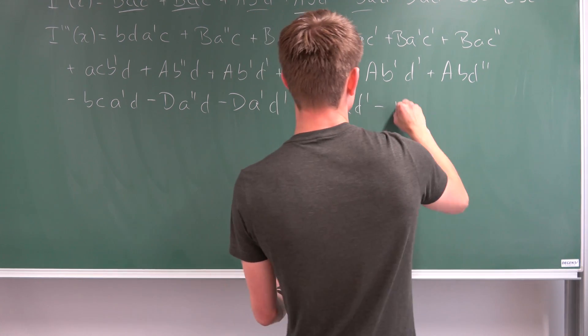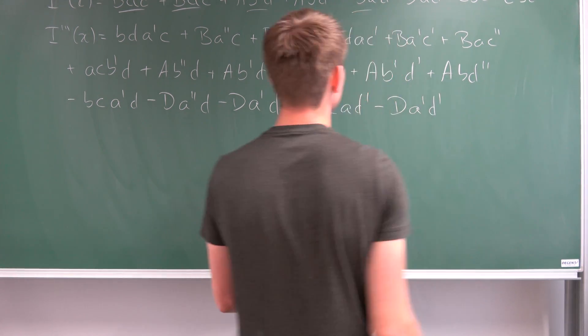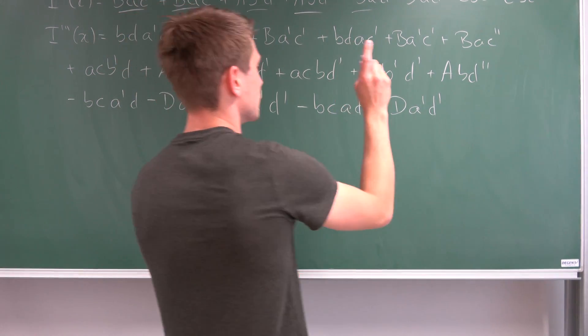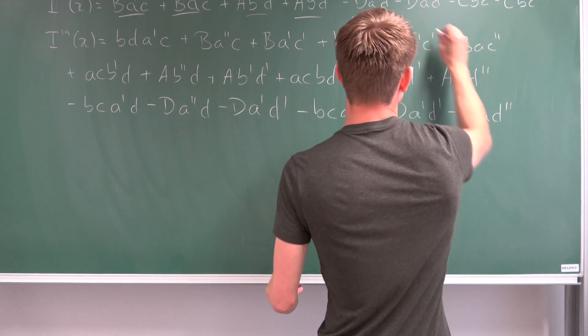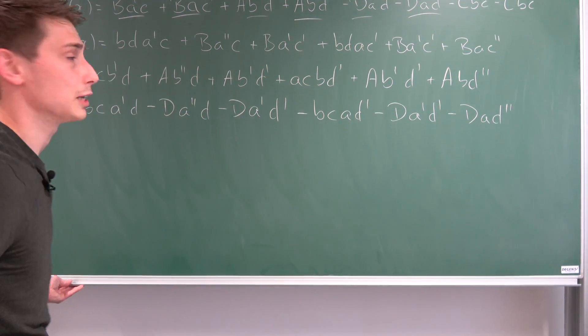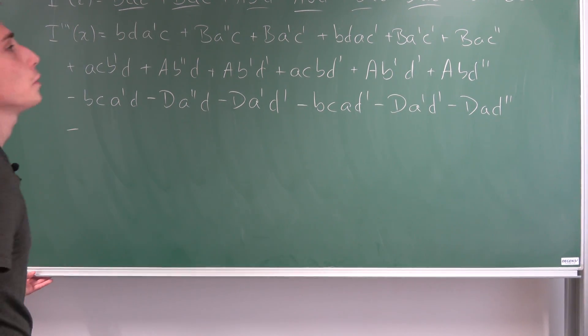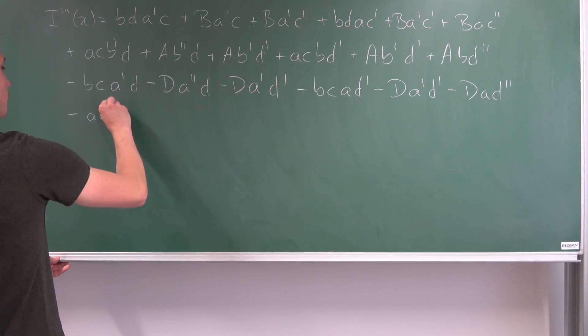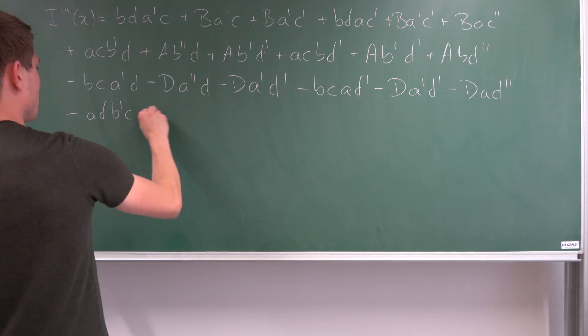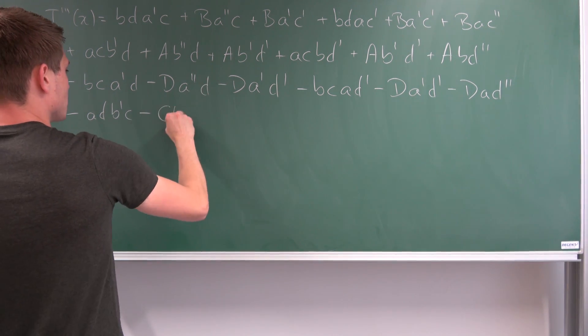And minus D A D double prime. So we have also done that and now for the last terms. So minus C, D differentiated is A times D, A times D, A times D B prime times C minus C B double prime C minus C B prime C prime.